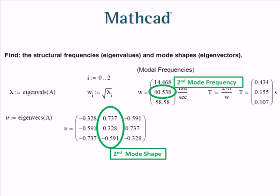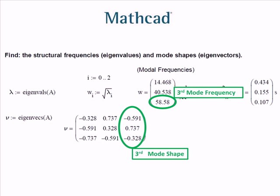Similarly, the next highest frequency will be the second mode with its corresponding mode shape. And again, in this solution, the second mode was the second entry in the eigenvalues vector, and so its eigenvector is the second mode shape. And lastly, the third mode frequency and its mode shape are the remaining values.